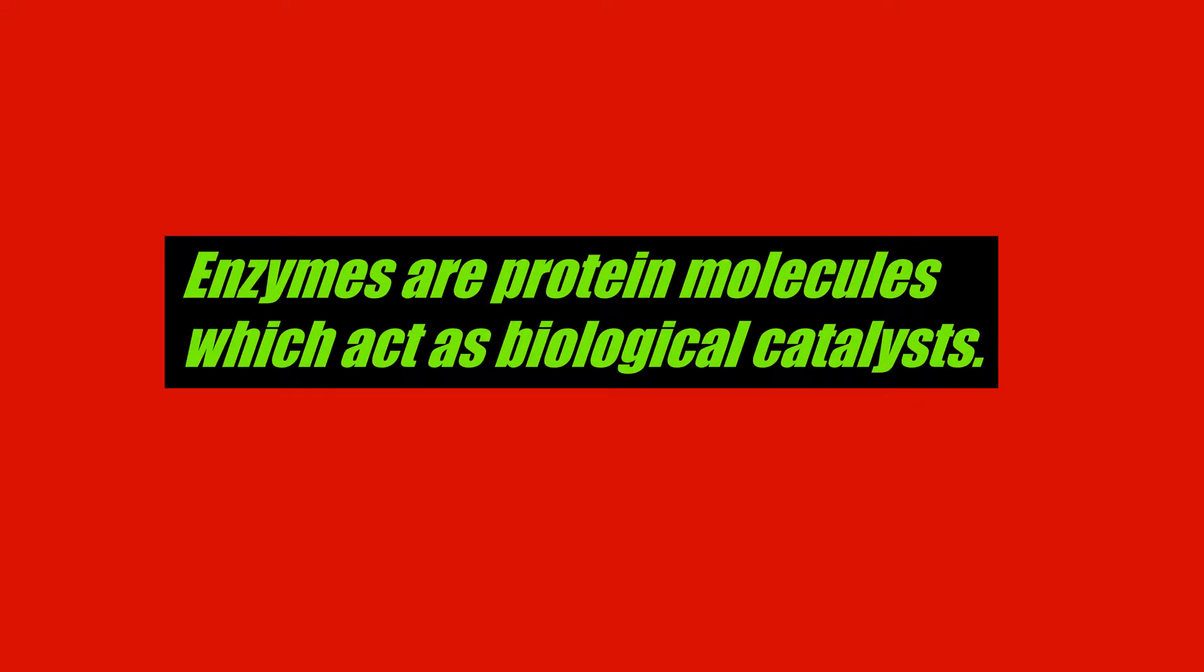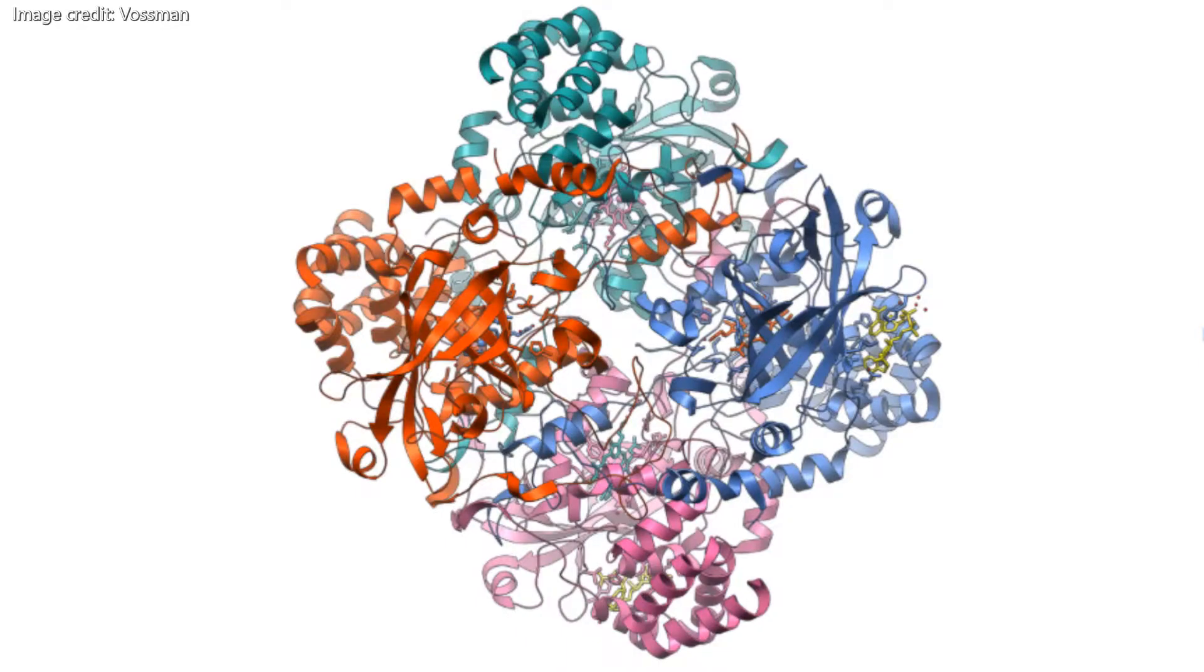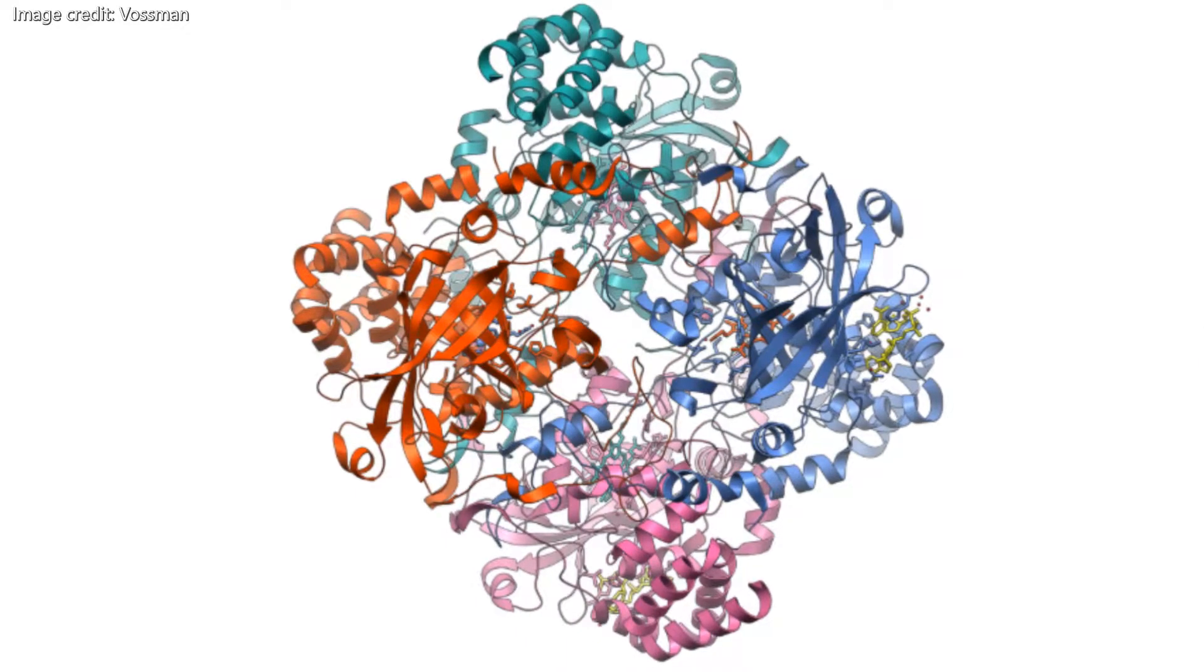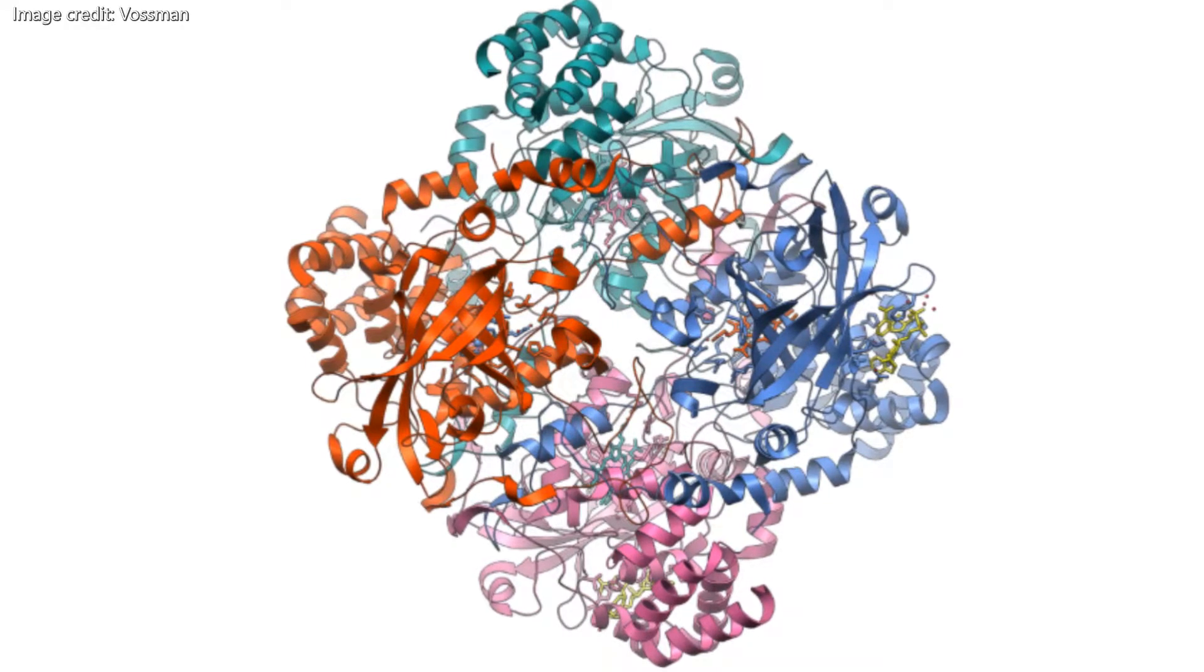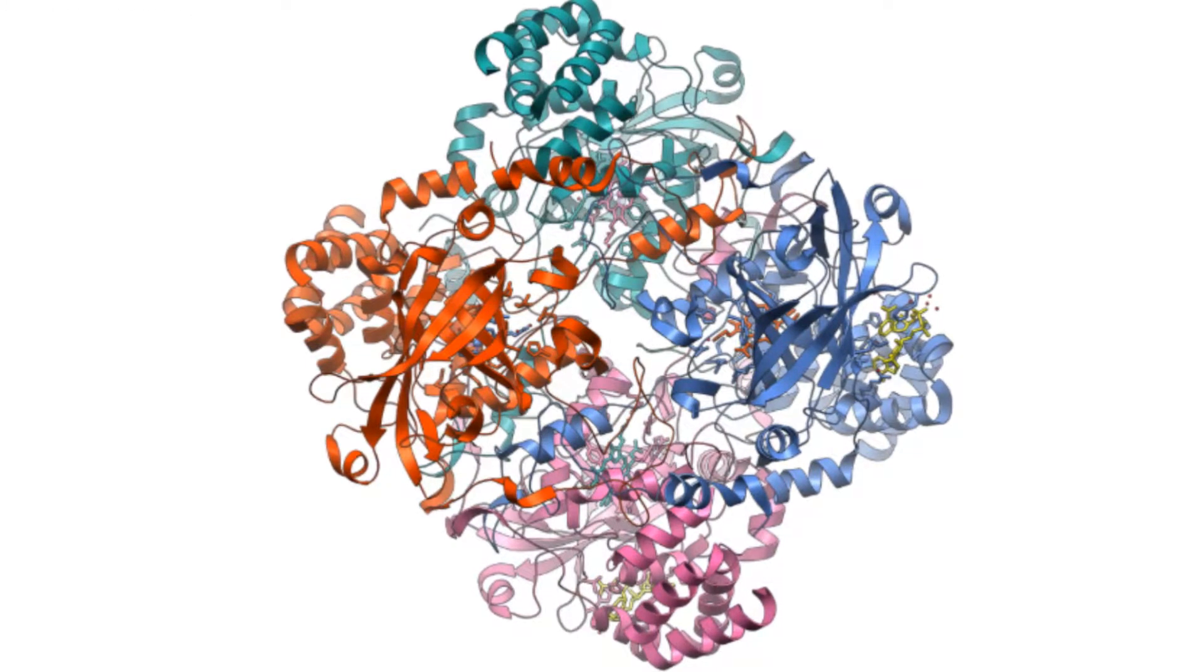Elephant toothpaste uses enzymes which are protein molecules that can catalyze a chemical reaction. The enzyme being used is catalase. This enzyme is found in almost all living organisms and serves to prevent oxidative damage caused by oxygen-containing molecules.